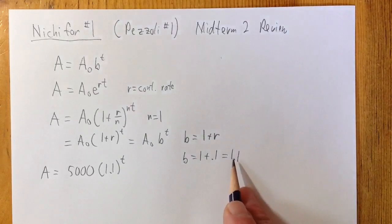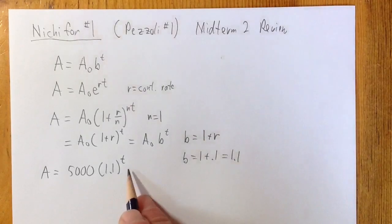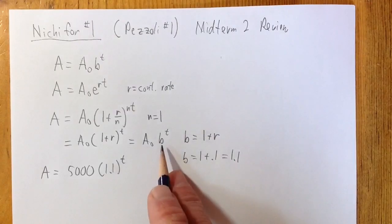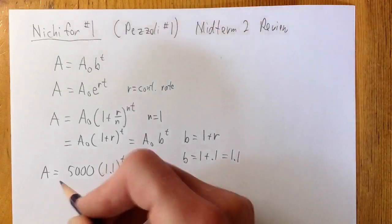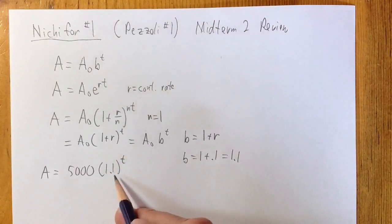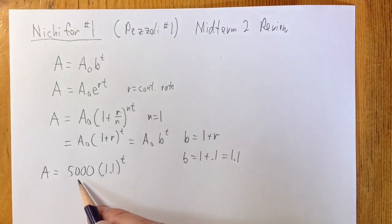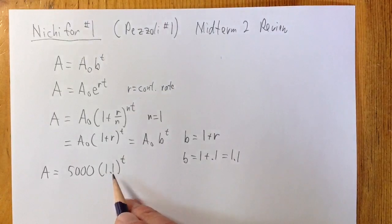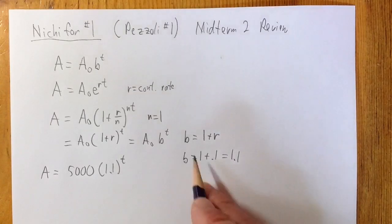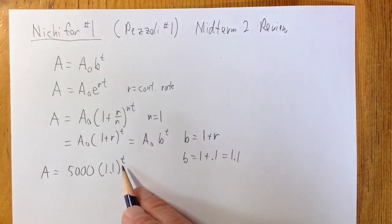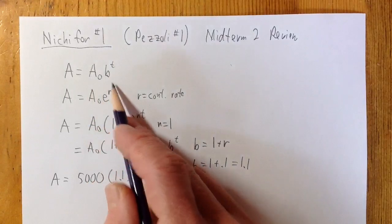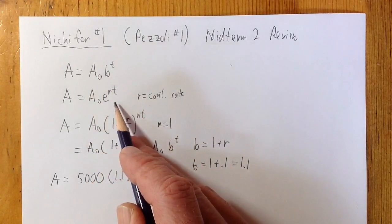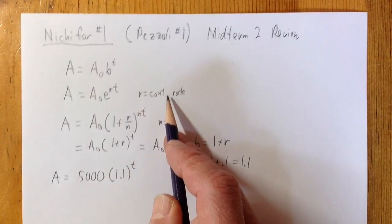If you know how much you have at the end of an hour — 10% more — then the b-to-the-t formula is easier to use because the base is just 1 plus how much more you have at the end. That's how they can write it down so fast. It's easier to use a₀bᵗ here because we don't know the continuous growth rate — we just know what it is at the end of the period.